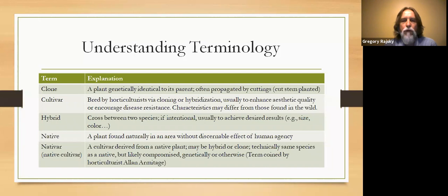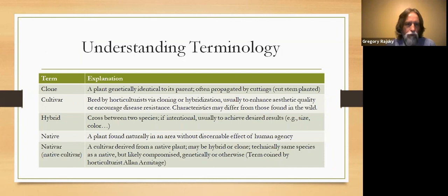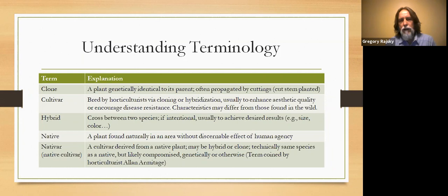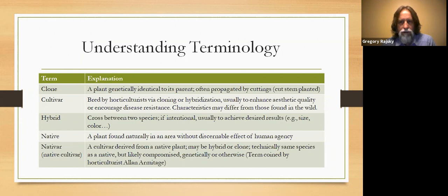When we talk about a native plant, we mean a plant found naturally in this area without human intervention — one that evolved or expanded its range here without being aided or moved by humans. The term 'nativar' derives from 'native cultivar,' coined by horticulturist Alan Armitage. It's a cultivar that derives in part from a native plant — it could be a hybrid or a clone. Here's the rub: it's treated as technically the same species as the native, but it has likely been compromised either genetically or otherwise, and may not perform all the same ecosystem services.